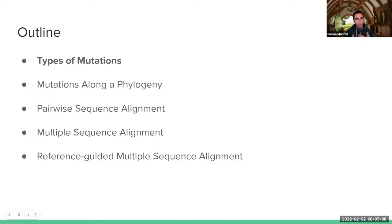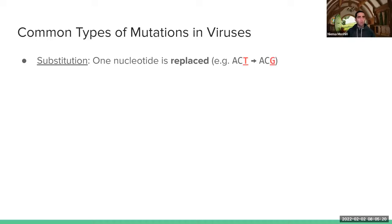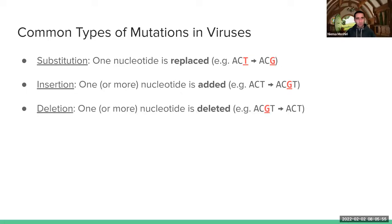Let's review some background information — types of mutations in viruses. One common type is a substitution, where one nucleotide is replaced with a different nucleotide. For example, my original sequence was ACT, and it mutated into ACG. We also have insertions, which are when one or more nucleotides are added. If my original sequence was ACT, maybe I inserted a G to make it ACGT. And then on the flip side, deletions are when one or more nucleotides are deleted from my original sequence — so ACGT might become ACT if the G got deleted.